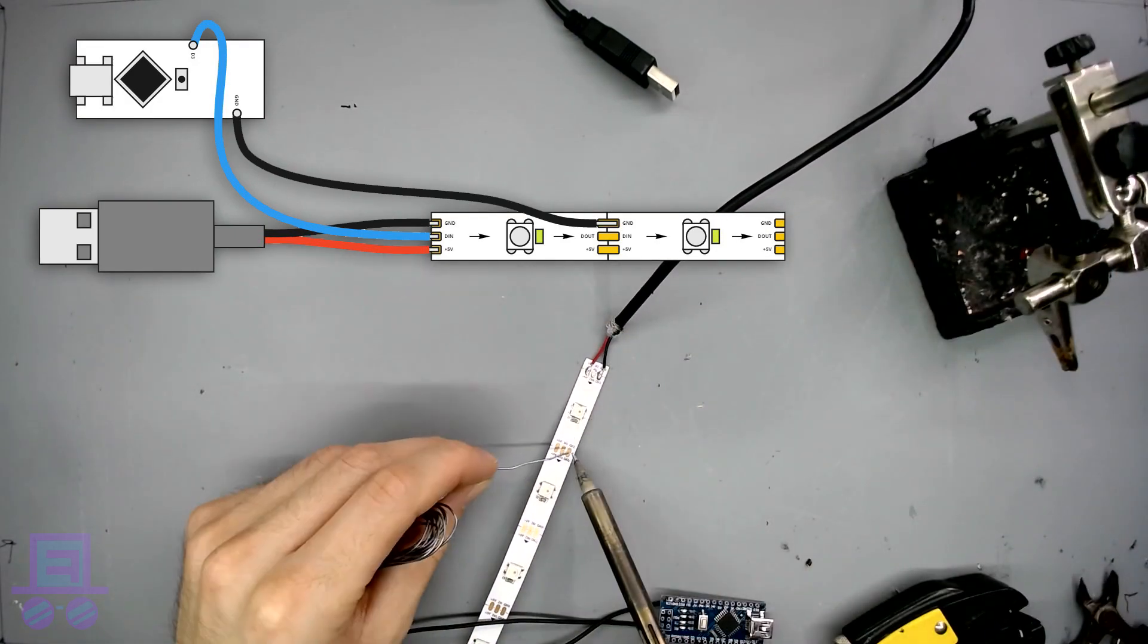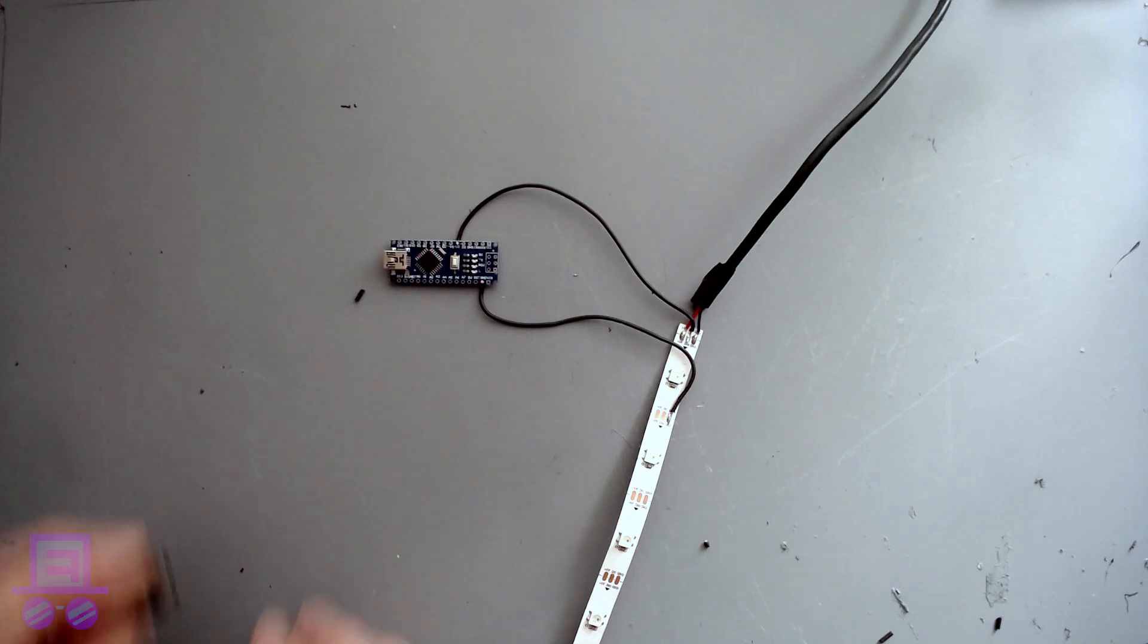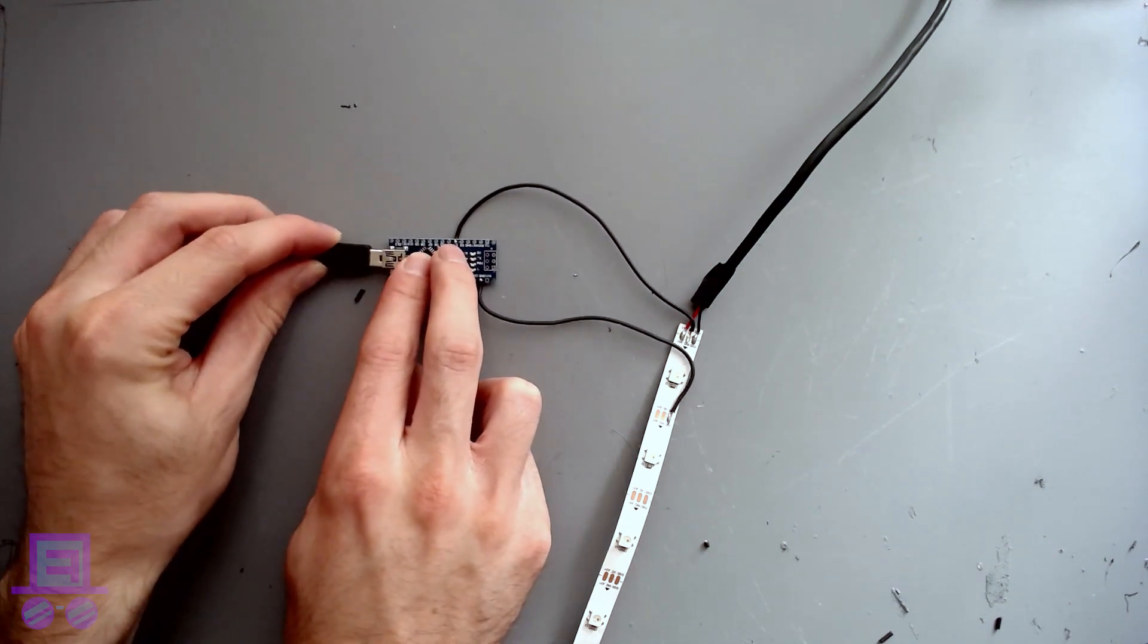Make sure to connect the Arduino to the data in pad and not the data out pad. Otherwise the signal will run backwards down the LED strip and create negative light. Honey! Sorry! Ow!